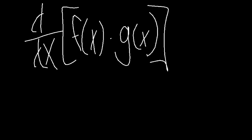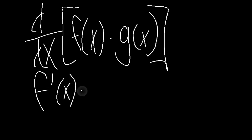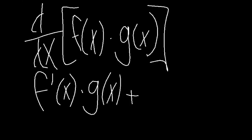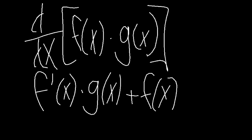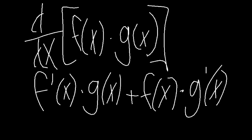The product rule states that you have to take the derivative of a function times the non-derivative of the other function, plus the non-derivative of the function you originally differentiated, times the derivative of the function you originally did not differentiate.